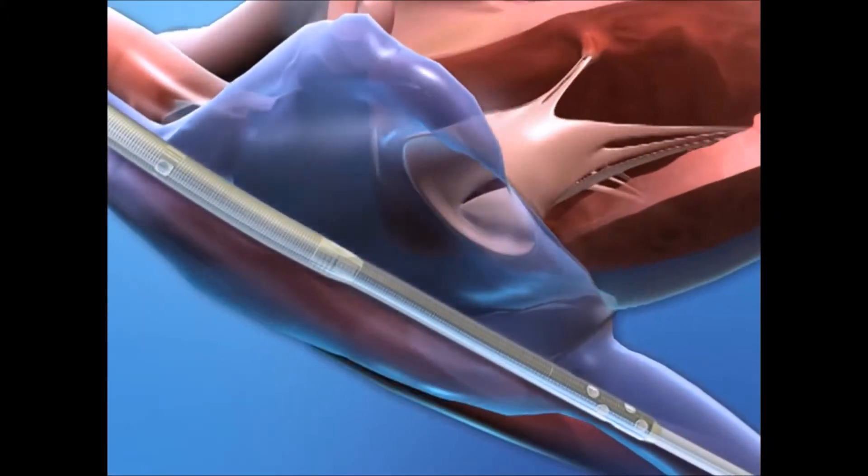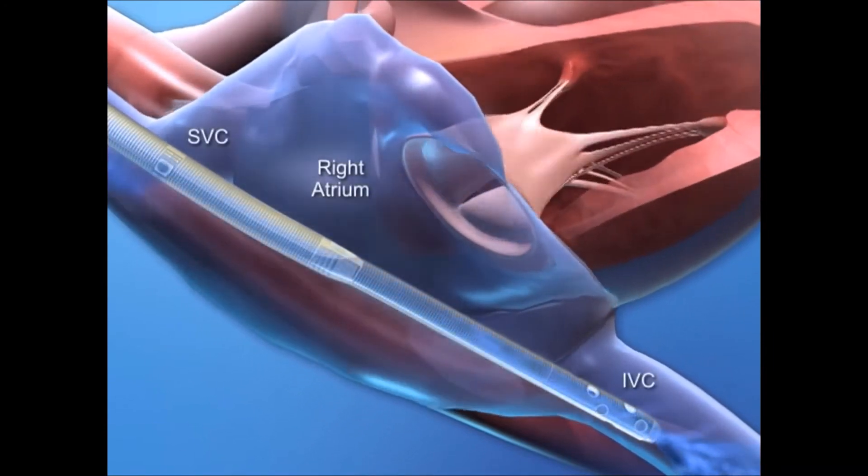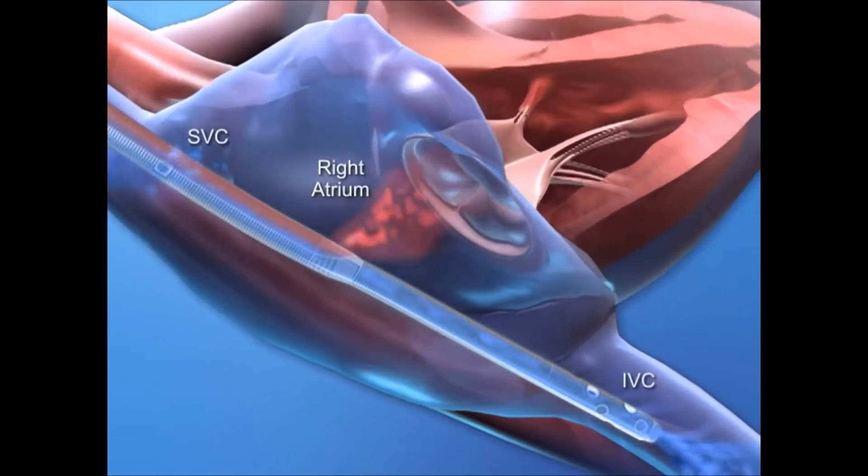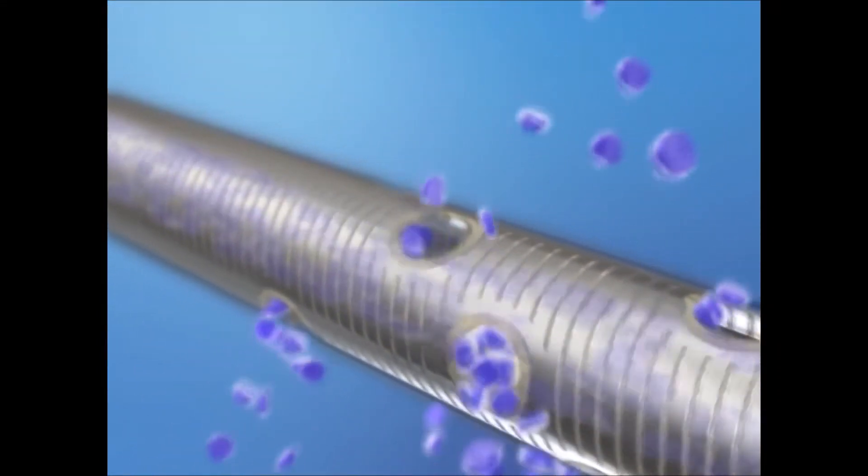Upper and lower drainage holes are located in the superior and inferior vena cava, and blood return from the external circuit exits the catheter in the right atrium. With its unique Bicavel design,